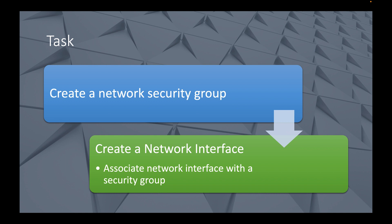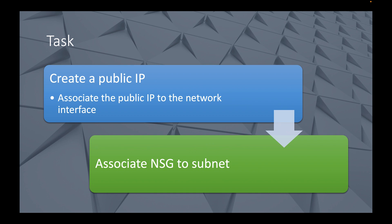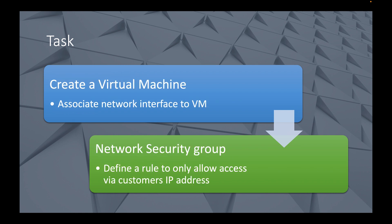We were able to create a network security group, create a network interface and associate that network interface with a security group, create a public IP address, associate the public IP to the network interface, and associate the NSG to the subnet. The next thing we need to do now is create a virtual machine, associate the network interface to the VM, and define a rule in our network security group to only allow access via the customer's IP address.